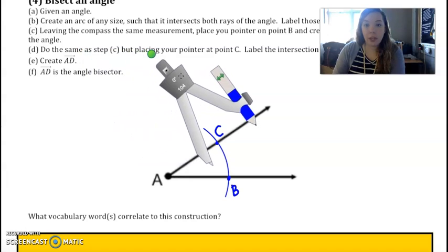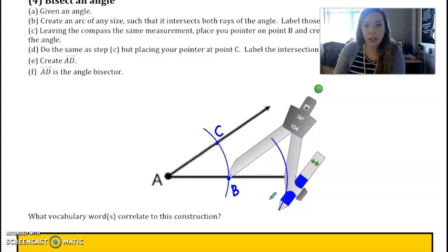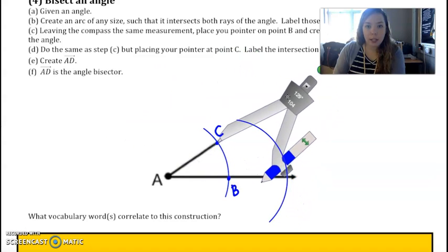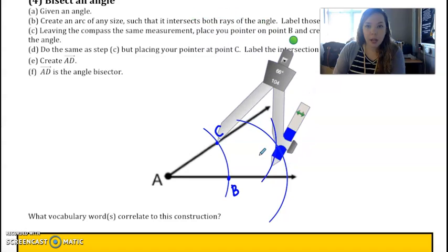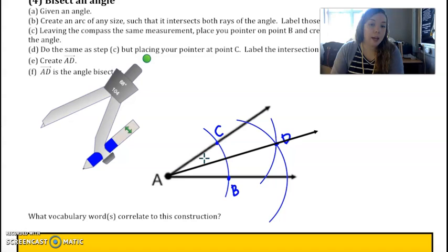I haven't changed the width at all but I'm going to take my pointy in and put it on point B to create an arc, and then I'm going to put it on point C to make an arc. Wherever they cross, that's going to be our point D here. If I draw a ray through AD, this is going to be my angle bisector, which means I have perfectly divided this angle into two pieces. Now CAD and DAB are the same measure.